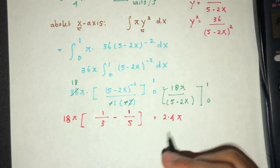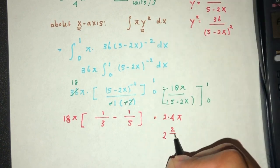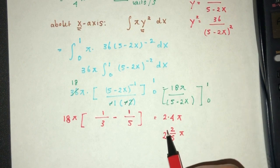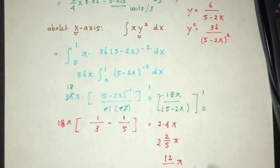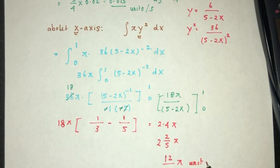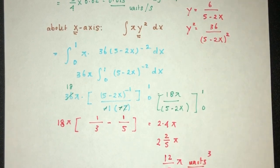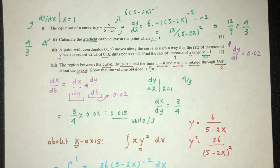And 2.4 is simply what? 2 and 2/5 π. If you simplify, 2 times 5 is 10 plus 2 is 12, so 12/5 π. And this is shown as required. That is your question in relation to units cubed for the volume. We have a few differentiations as well as integration.